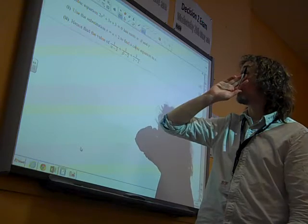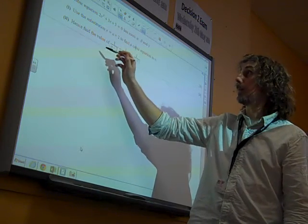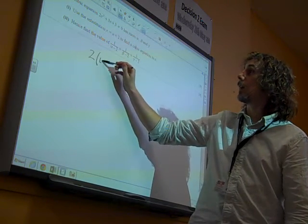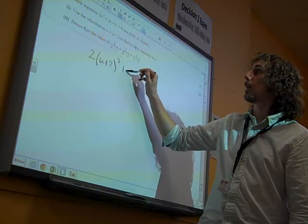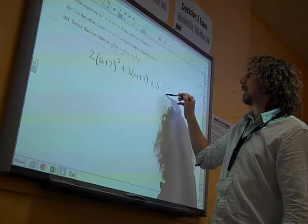Use the substitution x equals u plus 2 to find the cubic equation in u. Actually, we did all right with this bit. So substitution of that into there is going to give us 2 times u plus 2 cubed plus 3 times u plus 2 plus 3 is 0.